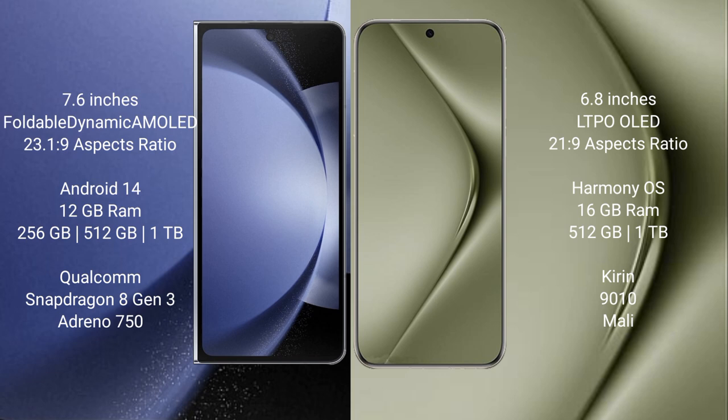Samsung Galaxy Z Fold 6 runs on the Android 14 operating system. Huawei Pura 70 Ultra runs on the HarmonyOS operating system. Samsung Galaxy Z Fold 6 comes with 12GB RAM and 256GB, 512GB, or 1TB internal storage.